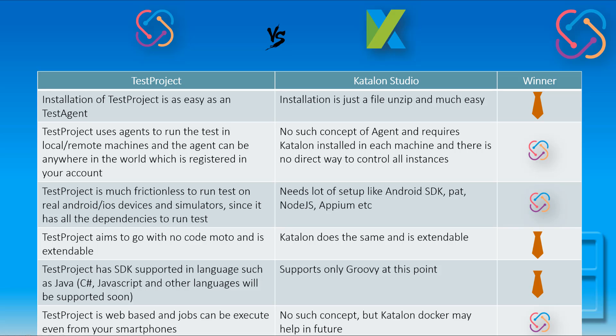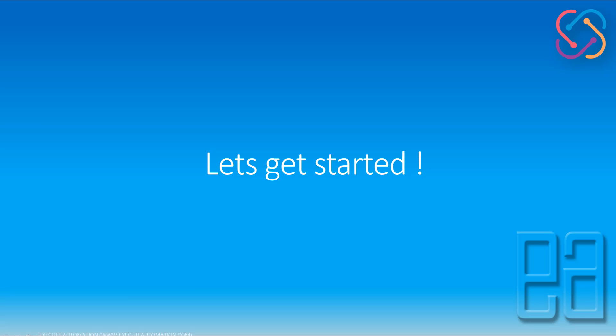You can see that the rich features TestProject offers completely differentiate it from Katalon Studio or any other automation testing tool, especially given that it's free. TestProject is a really cool tool — even though it's not yet publicly available, the feature set it has is really awesome. I'd say give it a try, install it, and I will walk you through how it works and how to run tests on your machine.